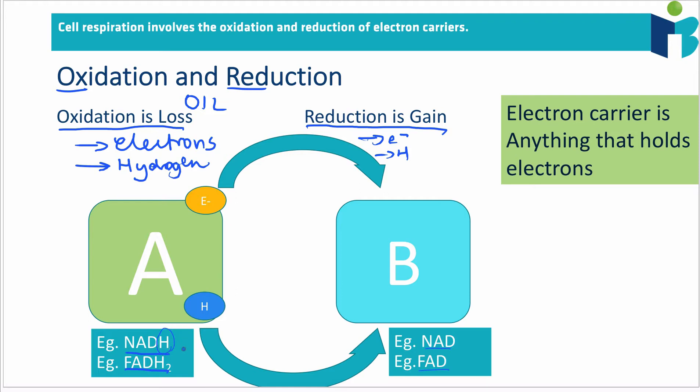And they can be oxidized into NAD or FAD. Notice they've lost hydrogens, and they have also lost electrons because these hydrogens carry electrons. So when you lose hydrogen or when you lose electrons, it is being oxidized.